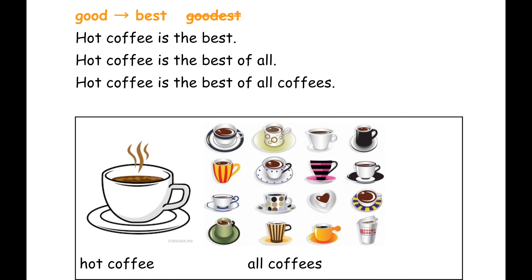Now students, when you have the word 'good', we change it to 'best'. We don't say 'goodest' — no — best. Hot coffee is the best. Hot coffee is the best of all. Hot coffee is the best of all coffees. All of these sentences are good; they are the same meaning.